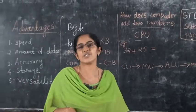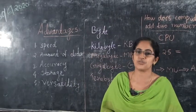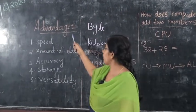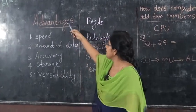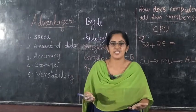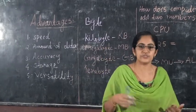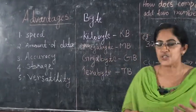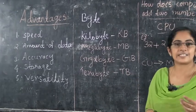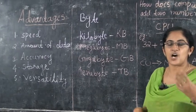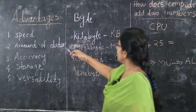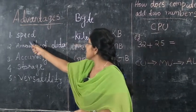Advantages of a computer — there are five points. The five advantages of a computer are: speed, amount of data, storage, accuracy and versatility.